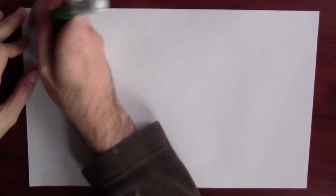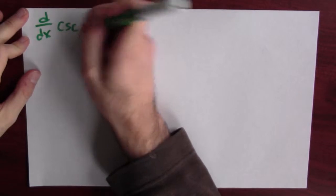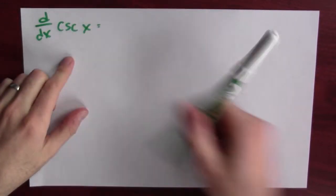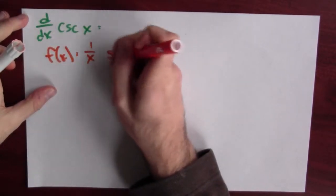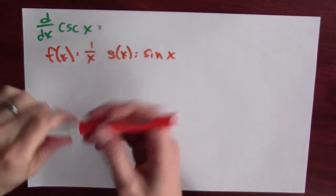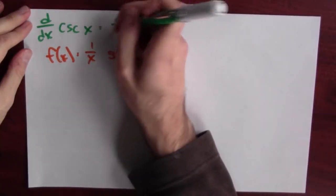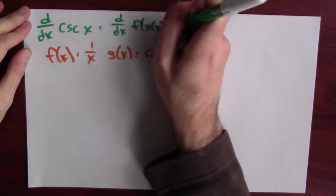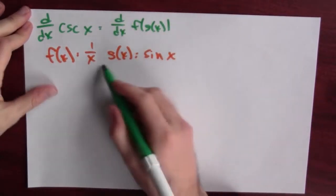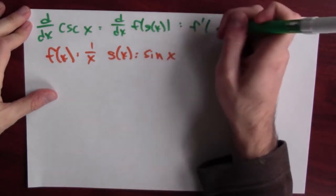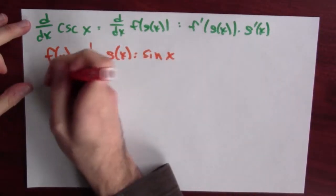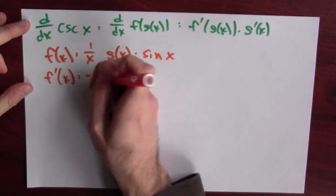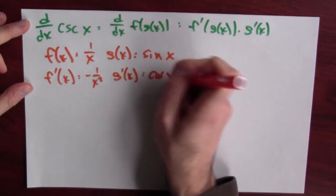We can play the same kind of game to differentiate cosecant. Cosecant is the composition of the 1/x function and sine — cosecant is 1 over sine. So this is the derivative of f(g(x)) where f is 1/x and g is sine. By the chain rule, that's the derivative of f at g, times the derivative of g. The derivative of 1/x is -1/x², and the derivative of sine is cosine.